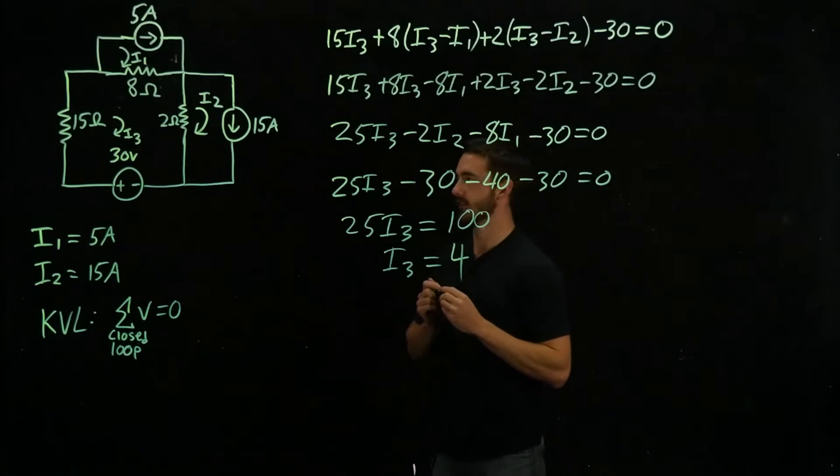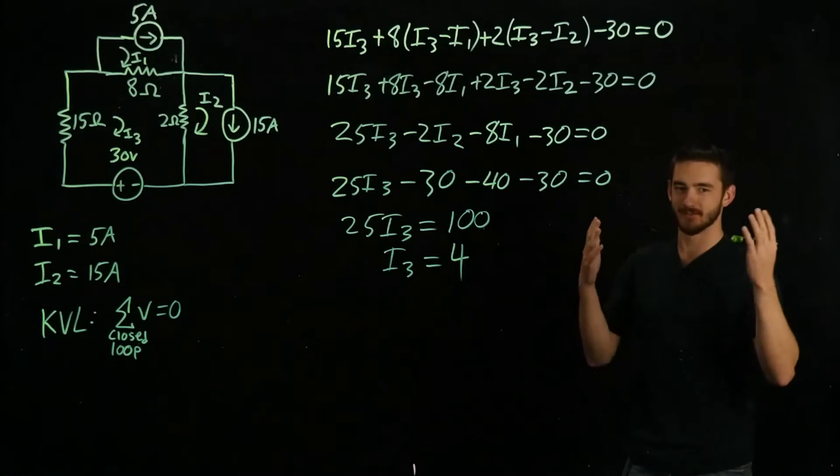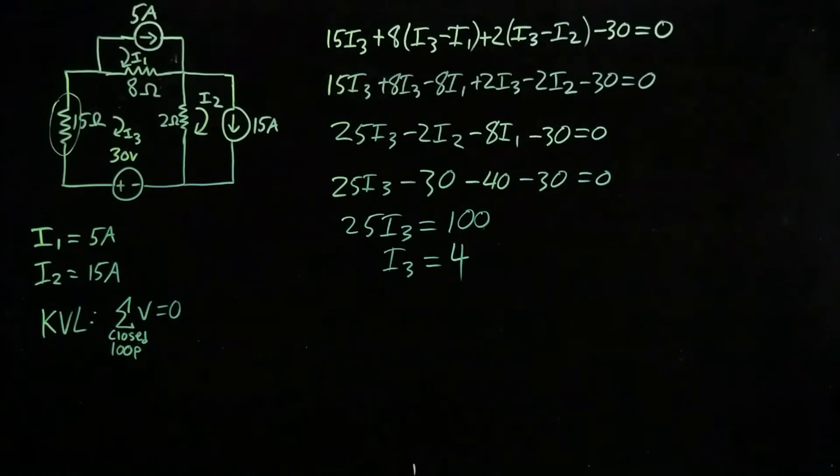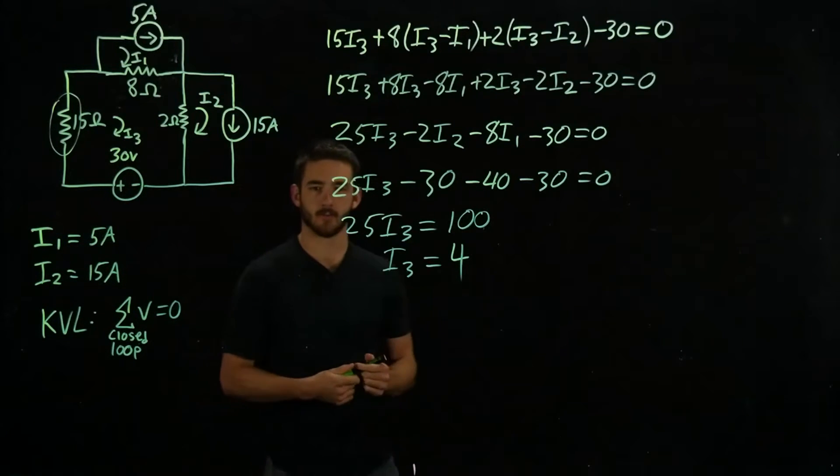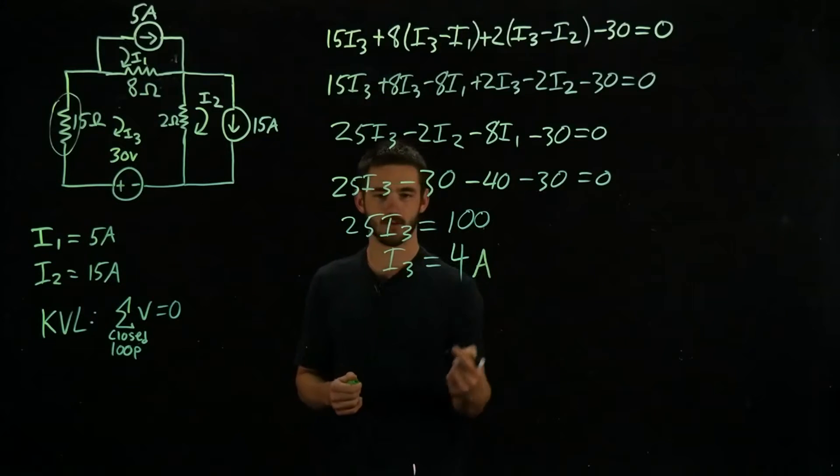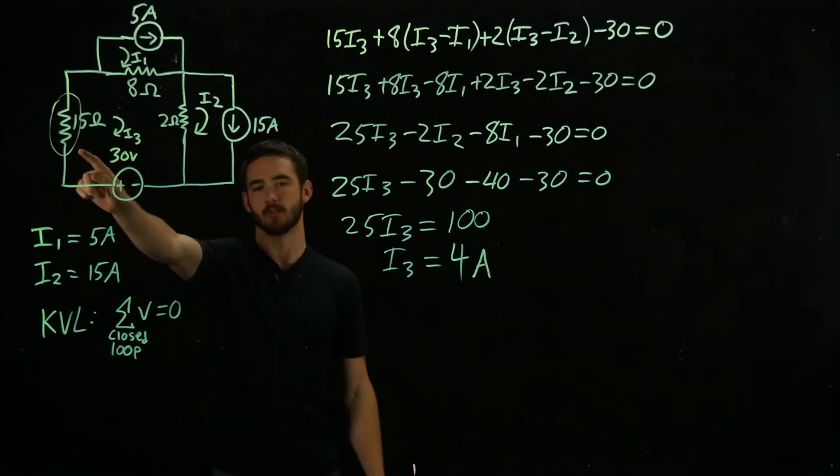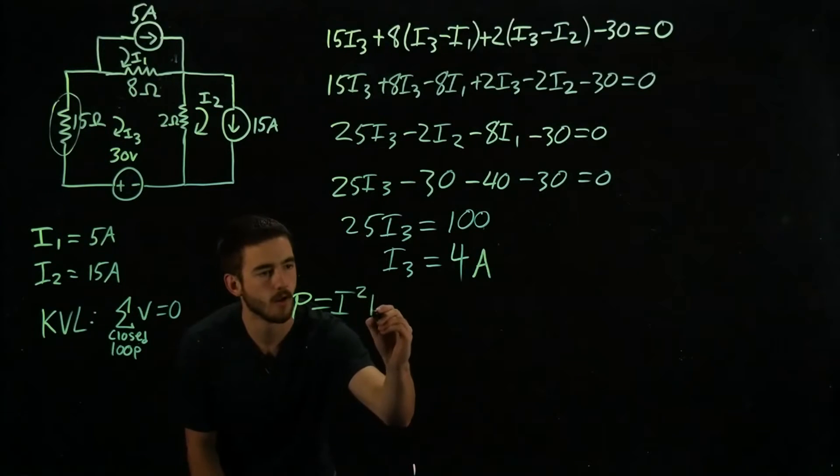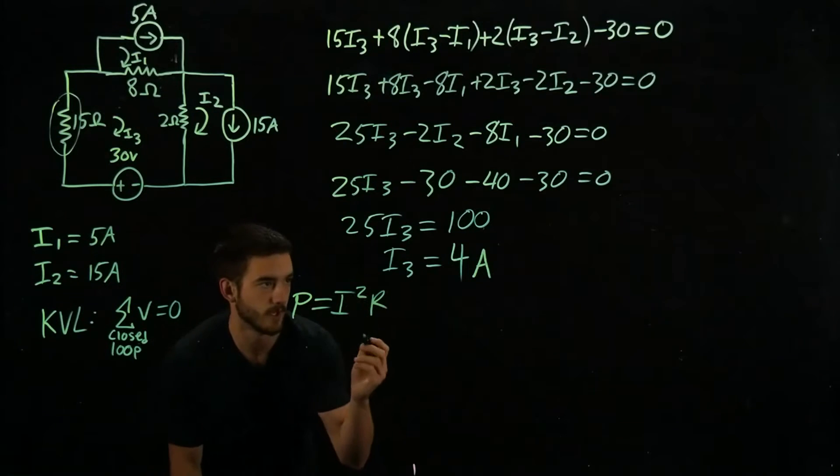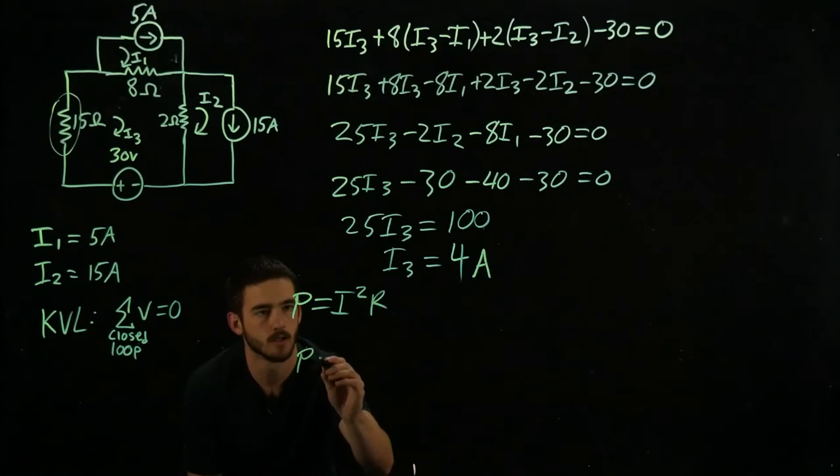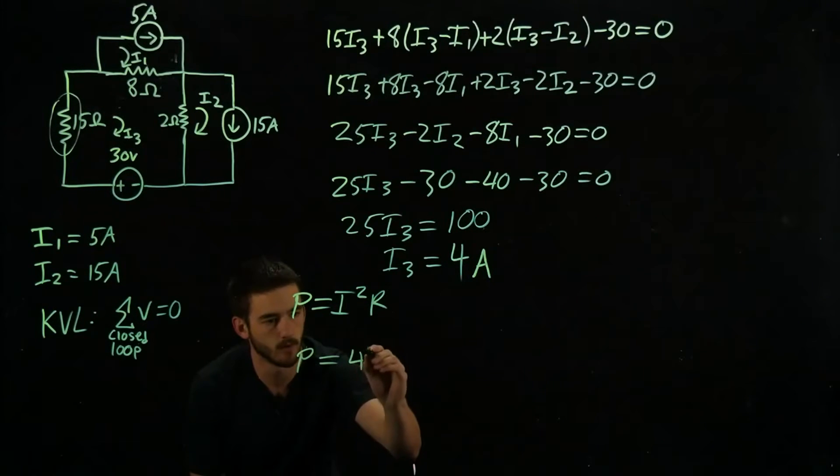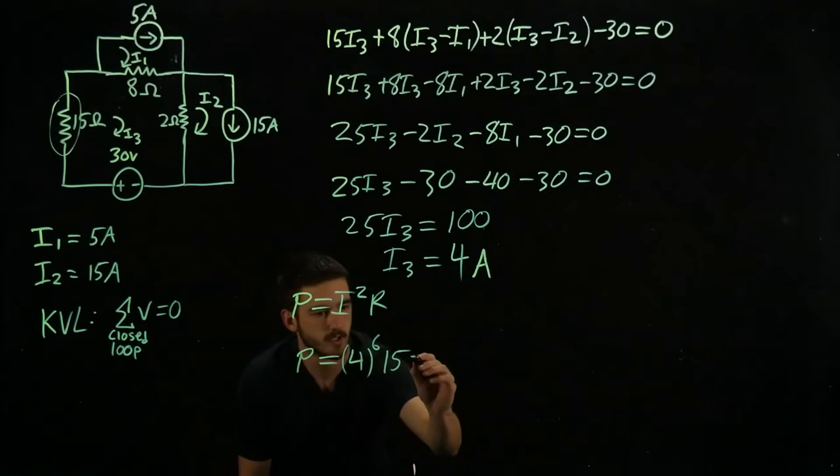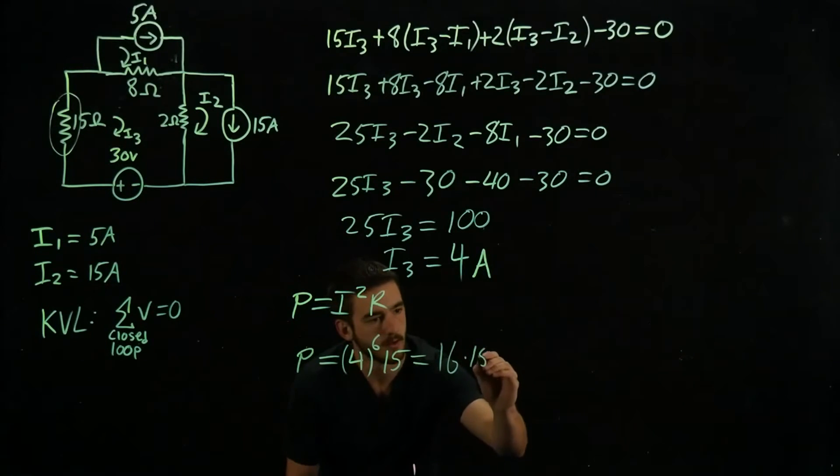So now the last step that we have to do here is solve for the power that's being dissipated across this resistor. So now that we've solved for this current, which is 4 amps, units are important. We're going to solve for the power that's being dissipated across this resistor right here. So the equation for power is P equals I²R. So now we just kind of plug and chug. So we have P equals I², which is going to be 4 squared times R, which is 15. And that's going to equal 16 times 15, which equals 240. And the unit for power is watts.